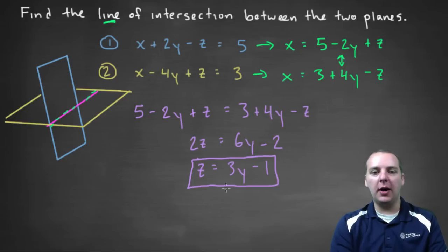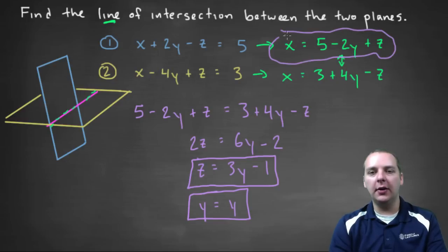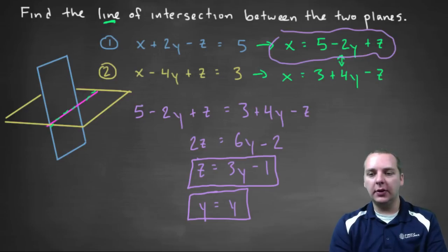So z is a function of y, obviously y equals y. And now all I have to do is get x as a function of y. But now think about it, let's just take maybe like this equation right here. x is equal to five minus two y, plus z, but z is a function of y. So here, let me change colors here real quick. This z right here, I'm going to replace it with what I know z is equal to, in our case, three y minus one.